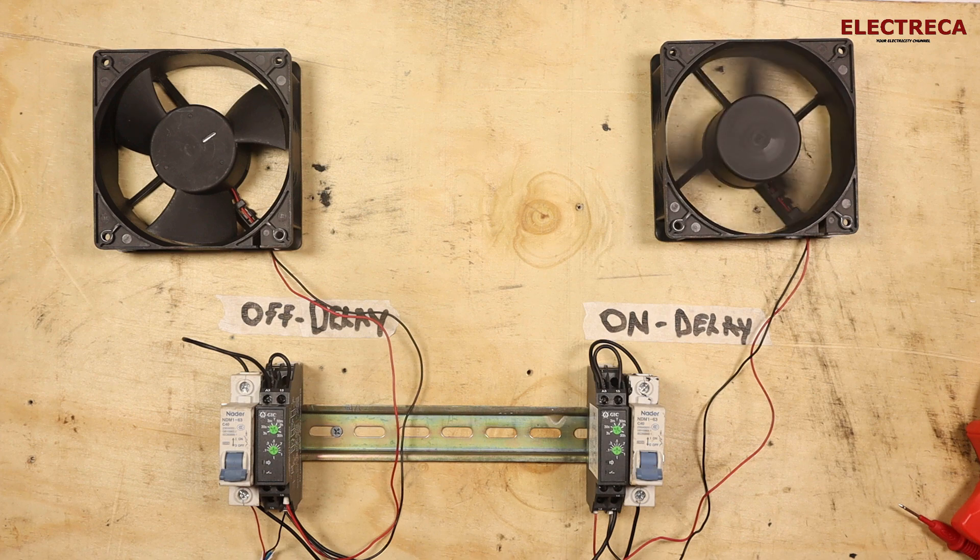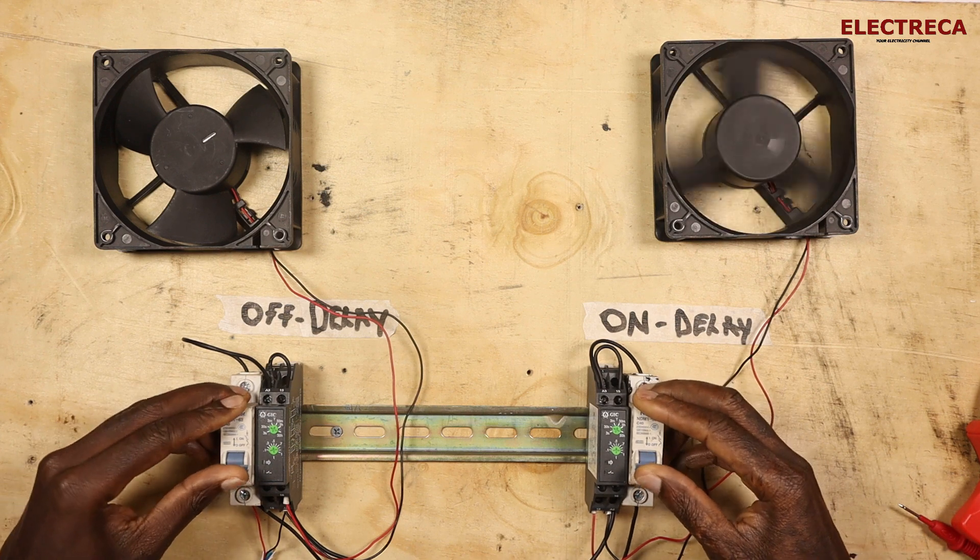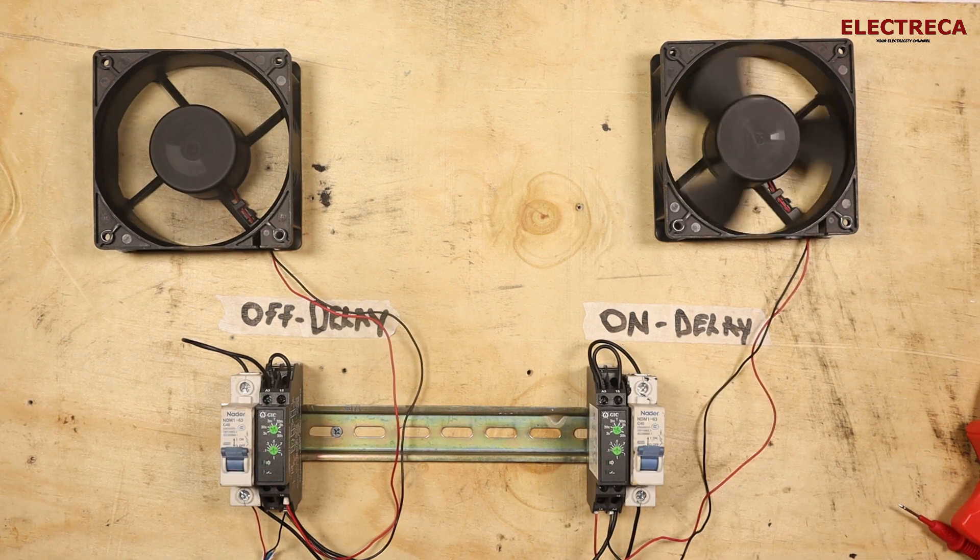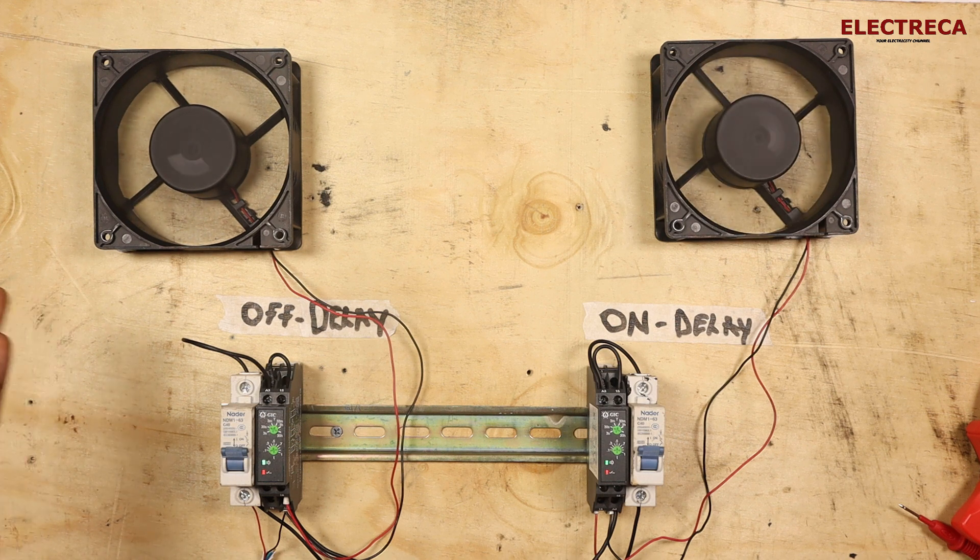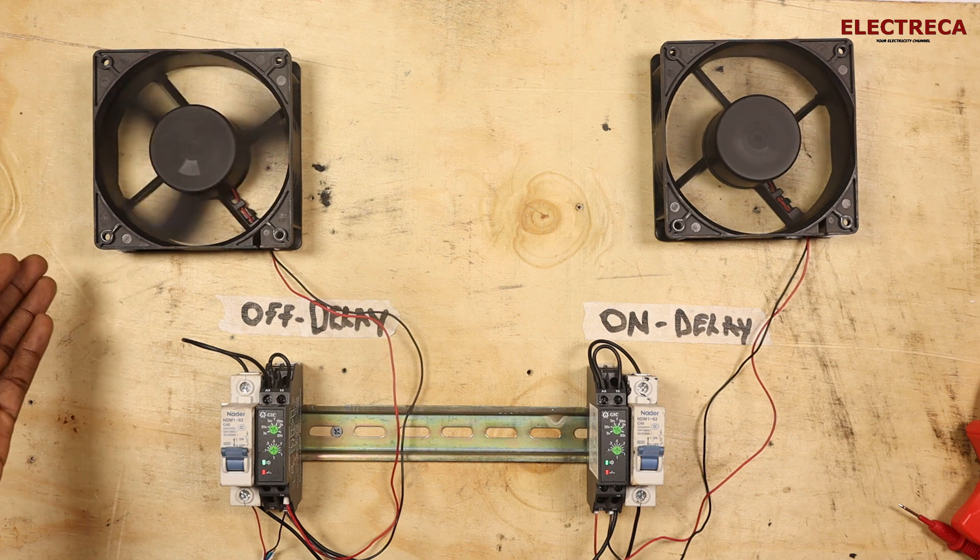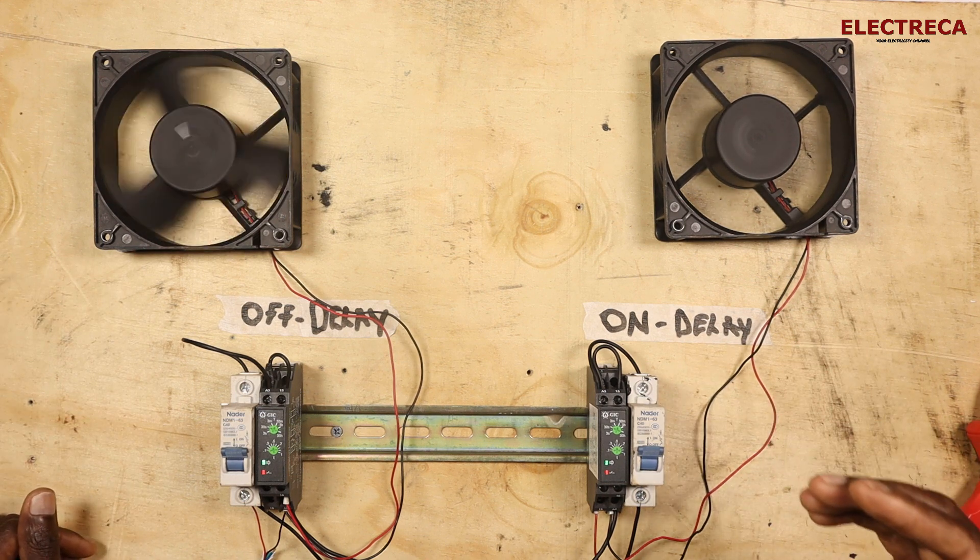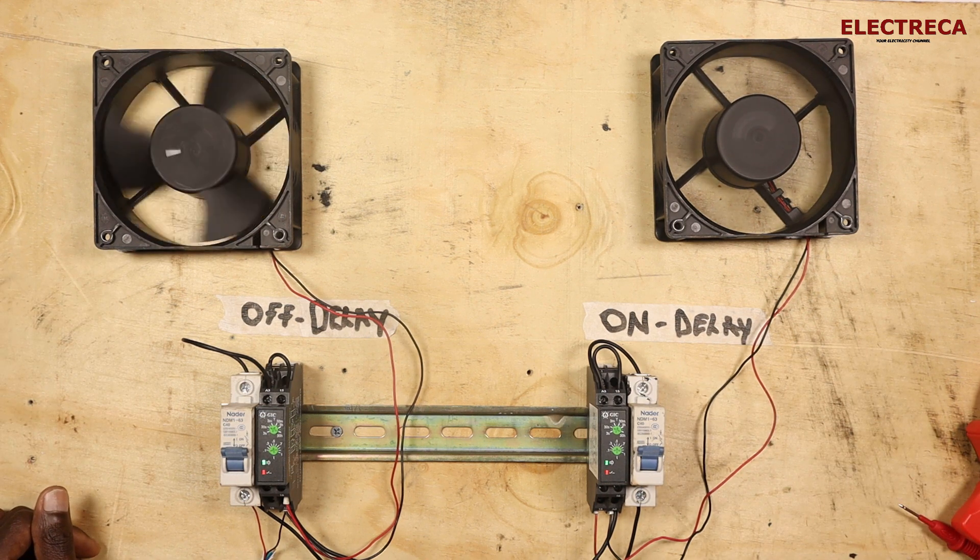But if we start both of them at the same time, both relays go on. But one, the coil is on and it's counting down. And then there is one, the coil is off, it's counting up.